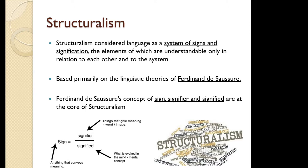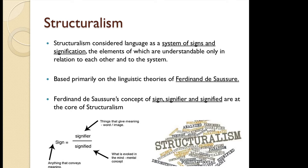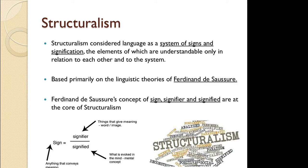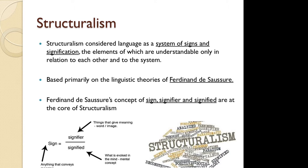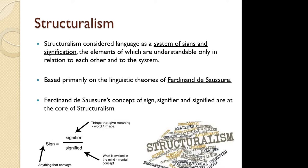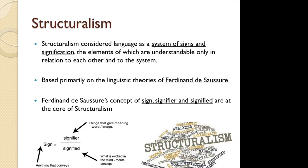Then comes structuralism, and structuralist critics said that structure is important — everything in this universe has a structure. Then came Ferdinand de Saussure, who explained structuralism theory further by his concept of sign, signifier, and signified. He explained that a sign is anything that conveys a meaning. The signifier is a thing that gives a meaning — a word or an image — and the signified is the conclusion, the mental concept that is evoked in your mind.